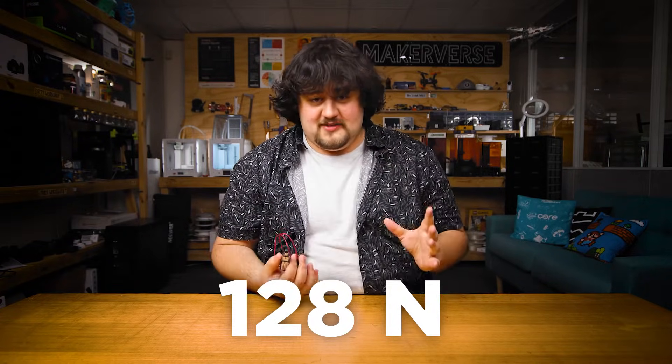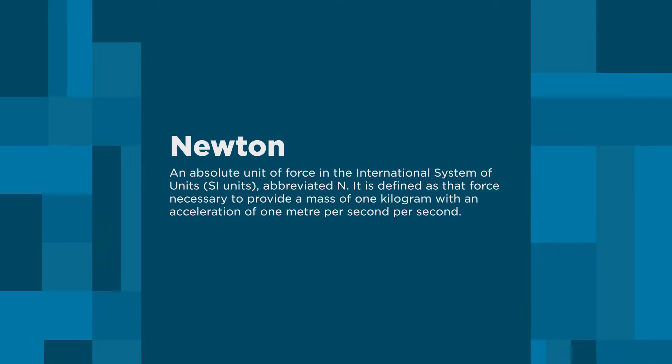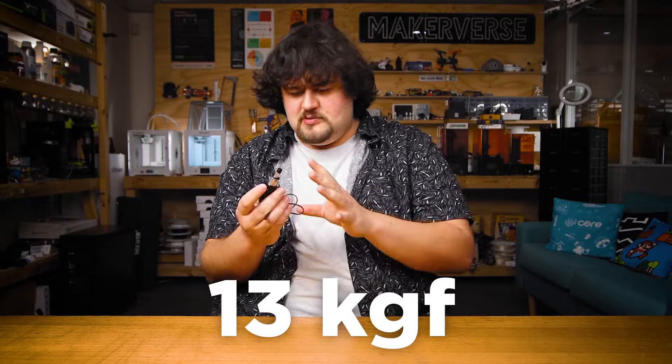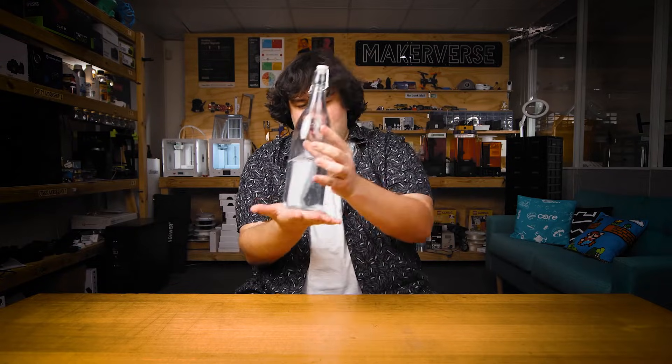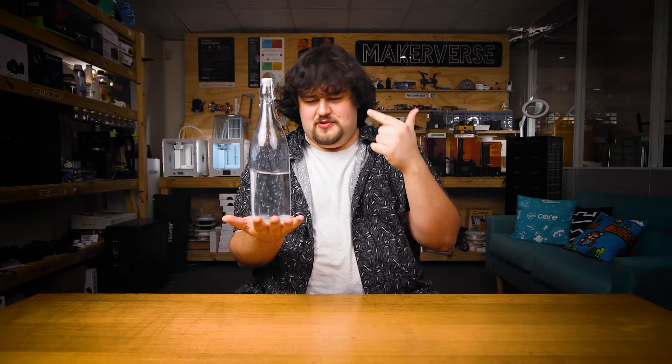Unless you're into physics, a newton isn't really a very intuitive unit of measurement. That's why there exists another much easier unit of force: the kilogram force. One kilogram force is equal to 9.8 newtons. So if we convert 128 newtons, we get about 13 kilograms of force — something we're used to and know what it feels like. If you hold a one kilogram weight in your hand, like this one liter bottle of water, it applies one kilogram of force on your hand thanks to gravity.